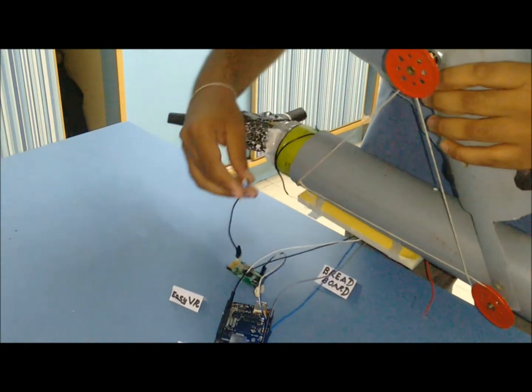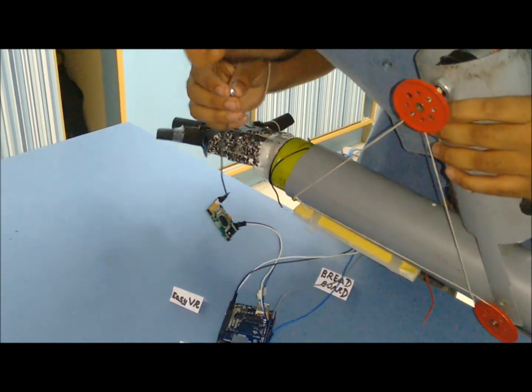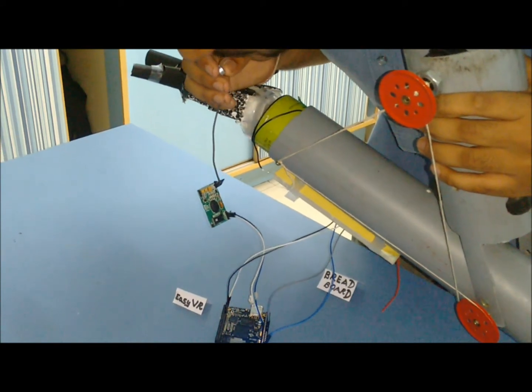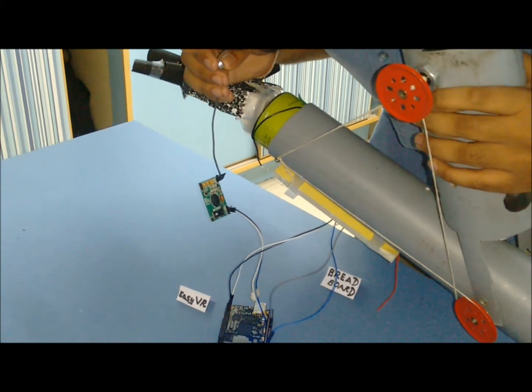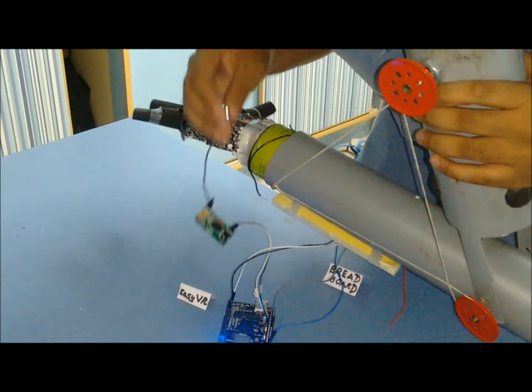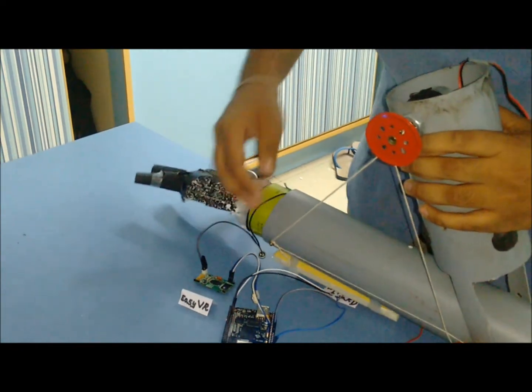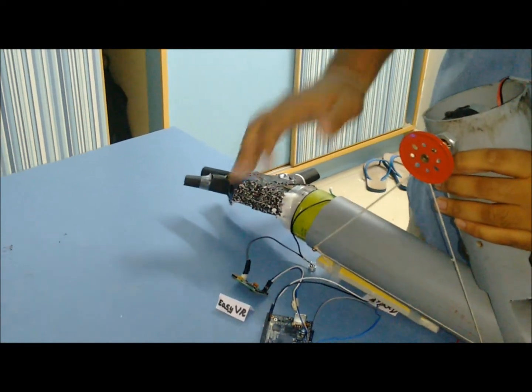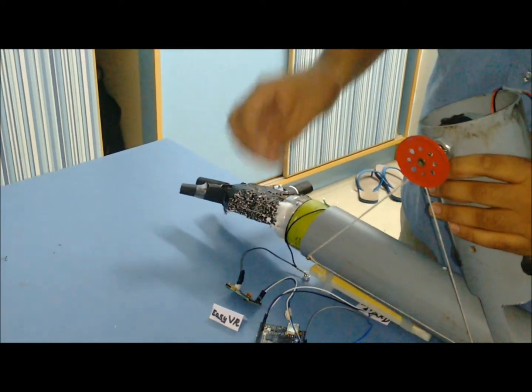Now when I say up, up, stop, down, stop. As you've seen here we have achieved the upward and downward motion of the prosthetic arm using the voice as an input.